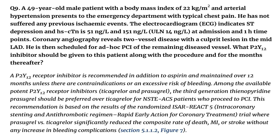Question 9. A 49-year-old male patient with a body mass index of 22 kg/m² and arterial hypertension presents to the emergency department with typical chest pain. He has not suffered any previous ischemic events. The ECG indicates ST depression and high-sensitivity cardiac troponin is 51 ng/L and 151 ng/L — the upper limit of normal (ULN) is 14 ng/L — at admission and 1-hour time points. Coronary angiography reveals two-vessel disease with a culprit lesion in the mid-LAD. He is then scheduled for ad hoc PCI of the remaining diseased vessel. What P2Y12 inhibitor should be given to this patient along with the procedure and for the months thereafter?